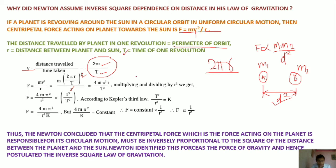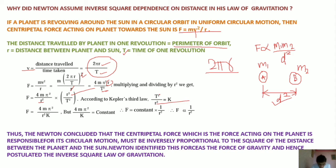Now we multiply and divide by r² — in both the numerator and denominator. So r × r² becomes r³. We get: F = (4mπ² / r²) × (r³ / T²). This separates the expression. Now Kepler's third law states that T²/r³ is a constant — and we have studied this in Kepler's third law — so r³/T² is also constant, which we call capital K.